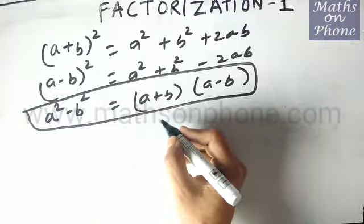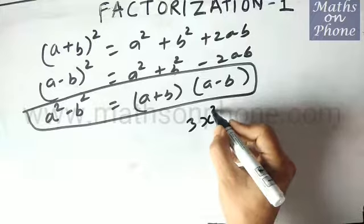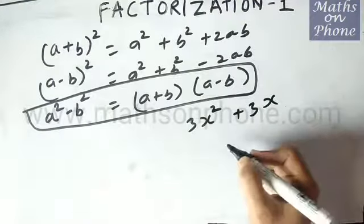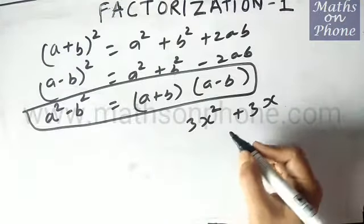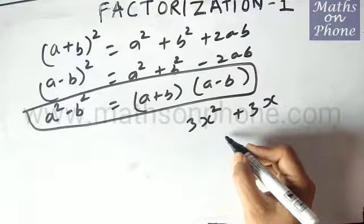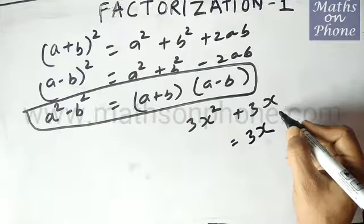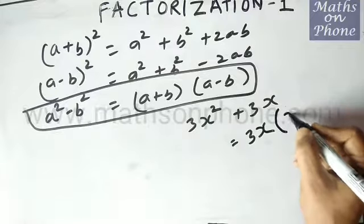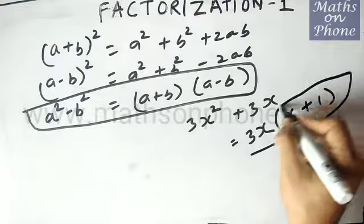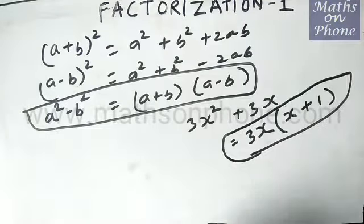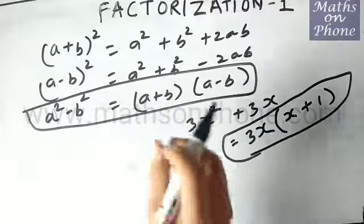What is the meaning of factorization? If I say: factorize 3x² + 3x — the meaning of factorization is to represent the given expression in product format. Here you can take 3x as common, so you are left with 3x(x + 1). That is the basic factorization you might have done in earlier classes. Now we will be using these identities to factorize things.